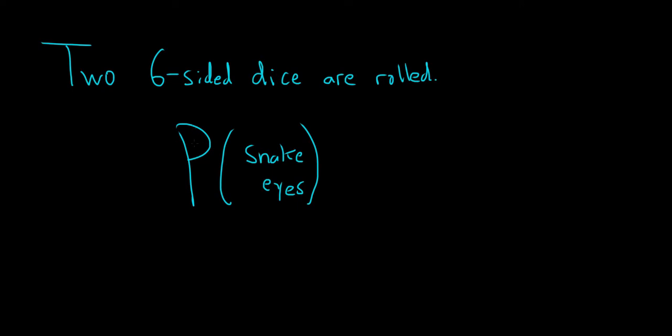In this problem, we're going to take two six-sided dice and roll them. We want the probability of getting snake eyes.